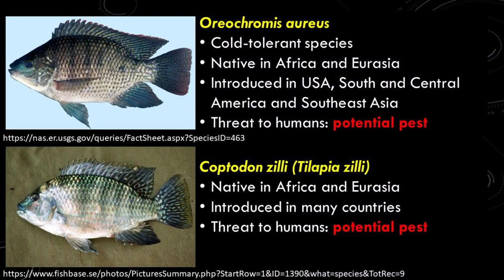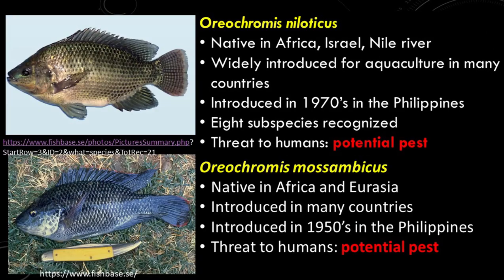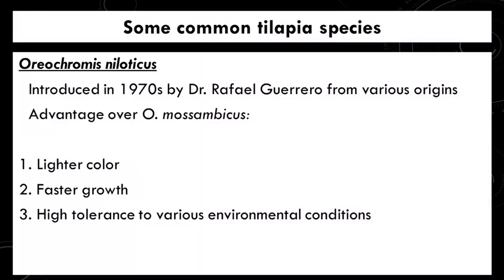Oreochromis aureus is a cold-tolerant species native in Africa and Eurasia, already introduced in the United States, South and Central America, and Southeast Asia. Coptodon zillii, or tilapia zillii, is native in Africa and Eurasia and has been introduced in many countries. Oreochromis niloticus is native to Africa, Israel, and the Nile River, widely introduced for aquaculture in many countries, and was introduced in the Philippines in the 1970s by Dr. Rafael Guerrero. There are 8 subspecies recognized in the world. The advantages of Oreochromis niloticus include lighter color, faster growth, and high tolerance to various environmental conditions.